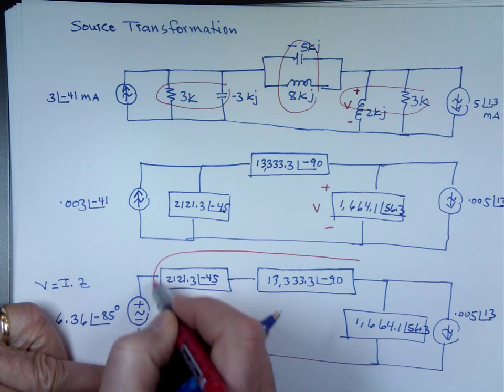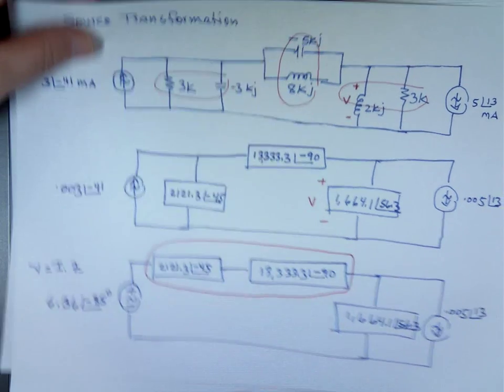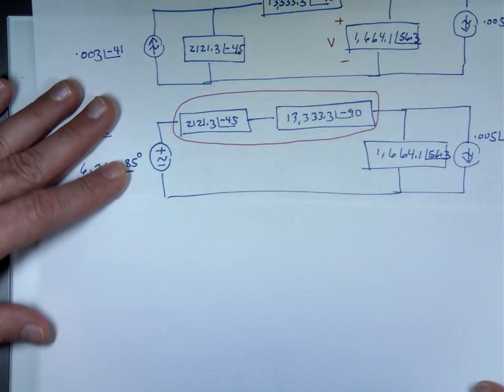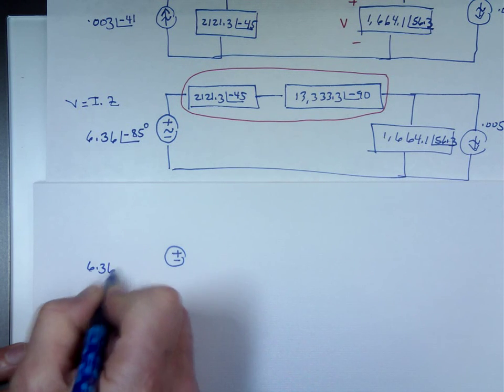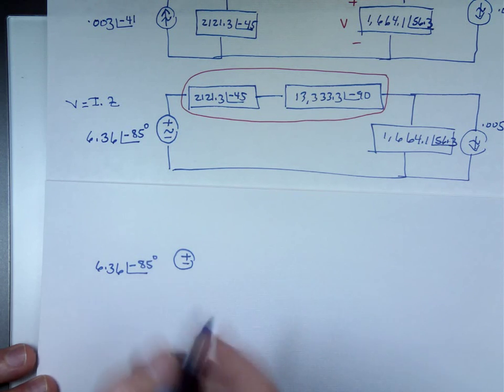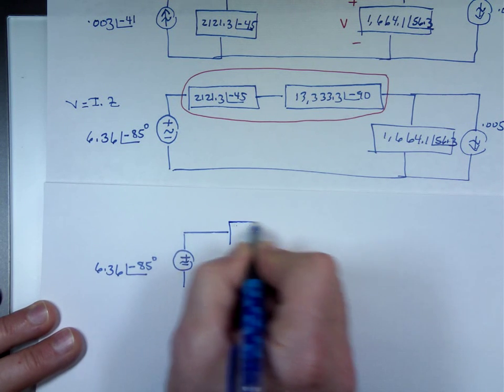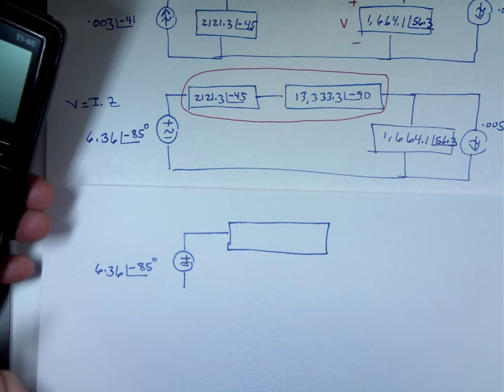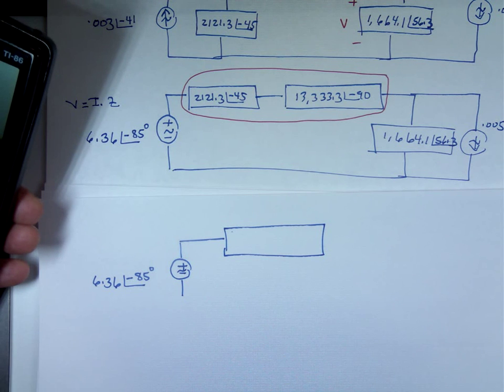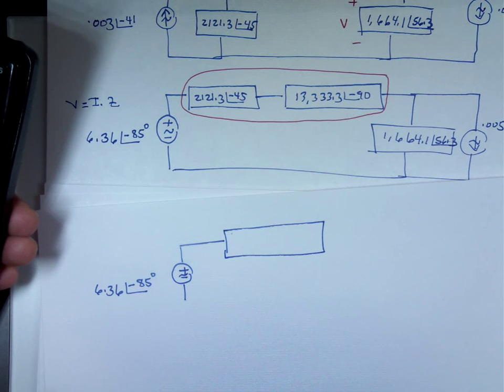Can I take these two impedances and add them? Notice it's an impedance, I can just add them. If there were admittance, you could use the product over the sum for them, if they were the Y value. If they were the Z value, you could use them just like resistors, and see as we add them. I'm going to add these two and see what that answer is. So here we go, 2,121.3 angle negative 45 add to it 13,333.3 angle negative 90.